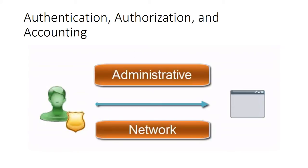Generally, there are two types of login: administrator and network. If a user is trying to log in remotely via VPN, this would be considered network access. The process of logging in is called authentication. Once logged in, the user is given rights to certain resources on the network — this is considered authorization.